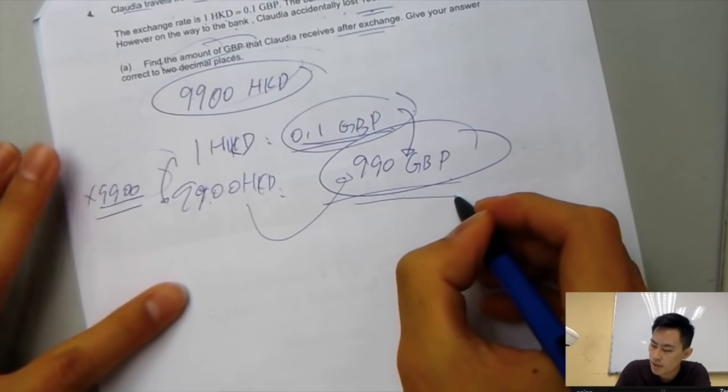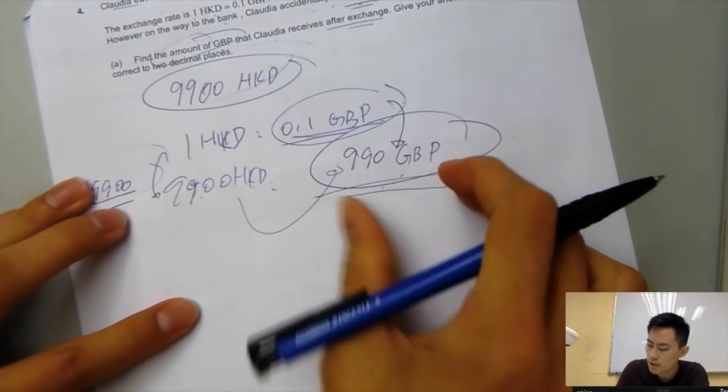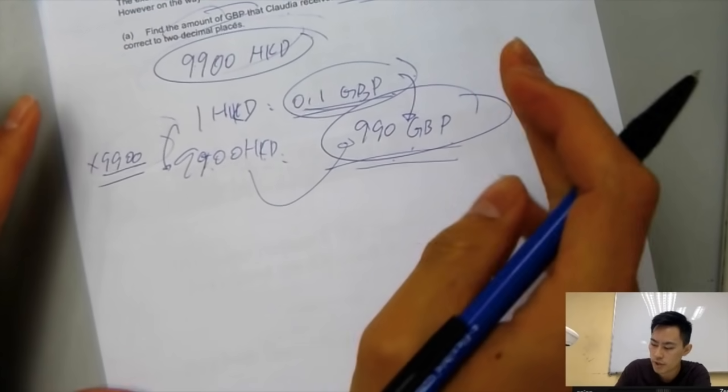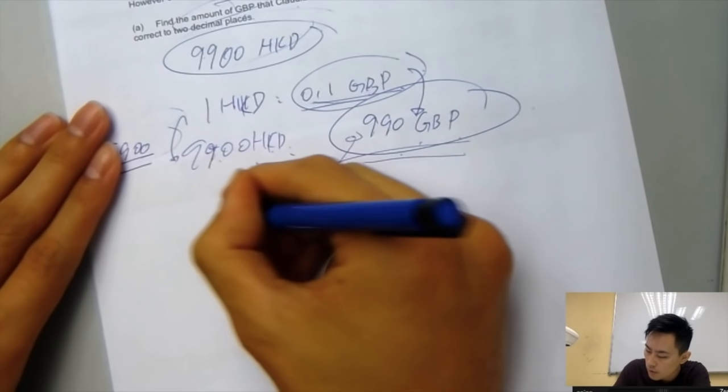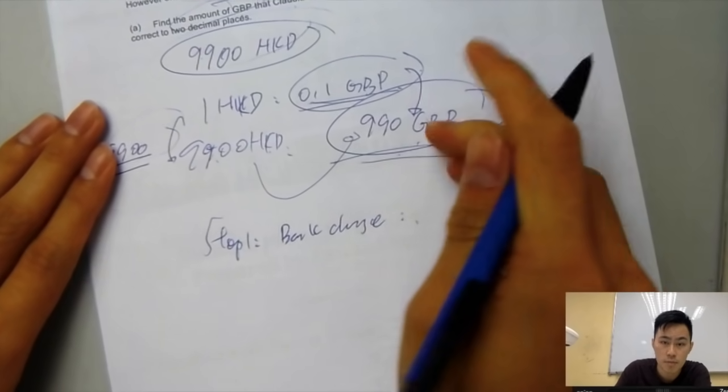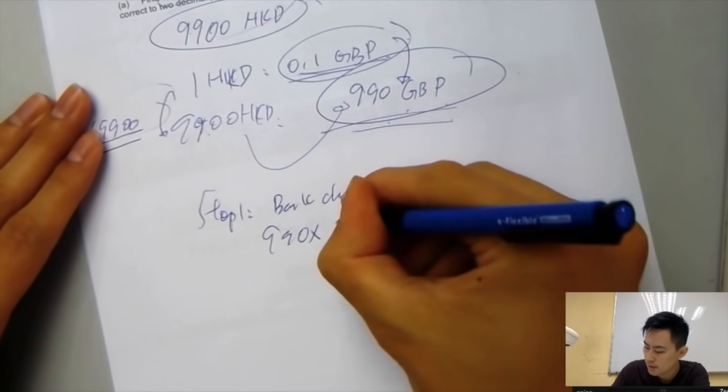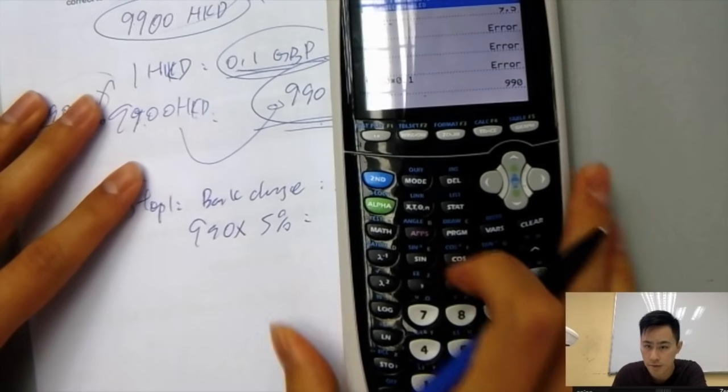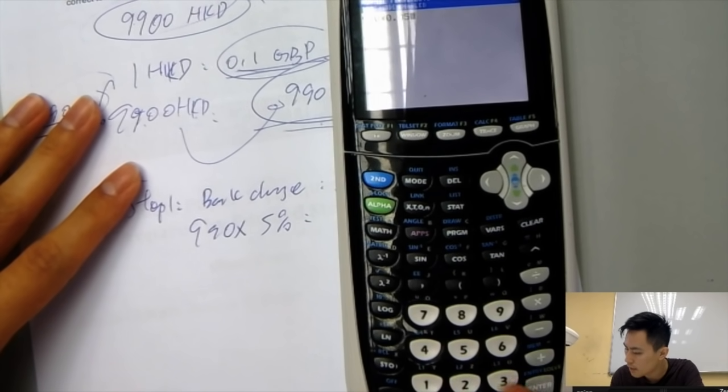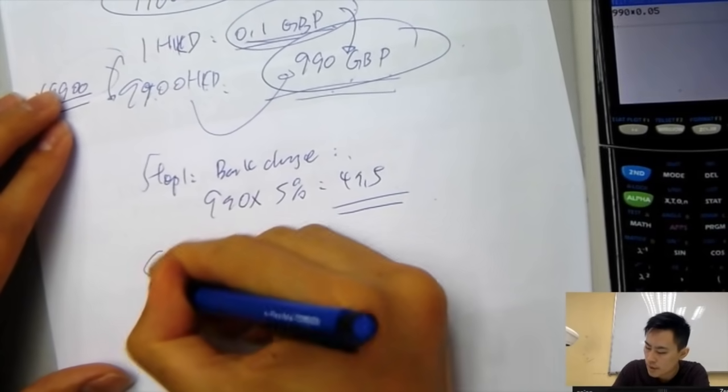This is not the end because the bank will charge you for the service, for 5%, so you're not taking all this away. You'll be taking only how many percentage left. Of course, you can do it by two steps. Step one, you can count the bank charge. That would be this amount. Before you take the money, you have to give 5% to the bank. 5% means 0.05. So 990 times 0.05, that is 49.5 pounds.